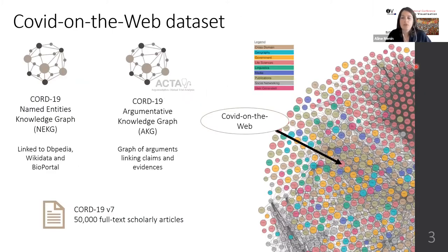The first contribution of this project is the COVID-on-the-web dataset, which is formed by two knowledge graphs. The first one contains named entities identified in the publications, disambiguated with and linked to DBpedia, Wikidata, and BioPortal. The second knowledge graph contains evidence and claims statements identified in the publications using argument mining methods. In this work, we use the seventh version of the CORD-19 dataset, which contains 50,000 full-text articles.